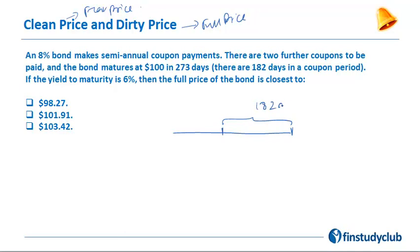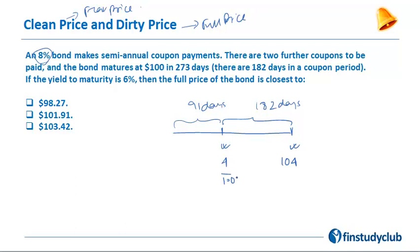We have one and a half periods left: one period of 182 days, then another 91 days, totaling 273 days. You get a coupon at each period and redemption at maturity. The YTM is 6% while the coupon is 8%, so the semi-annual coupon is $4, giving cash flows of $4 and $104. The semi-annual YTM is 3%. Since $4 is half a period away, I discount it at 1.03^0.5, and $104 is one and a half periods away, discounted at 1.03^1.5.